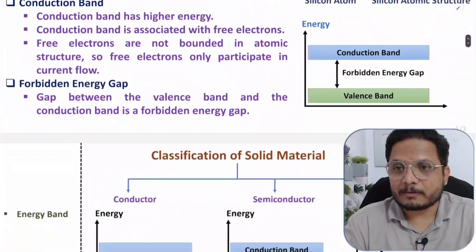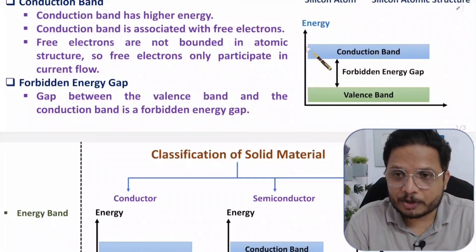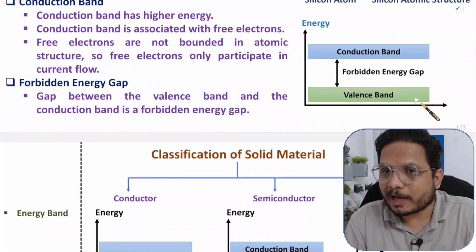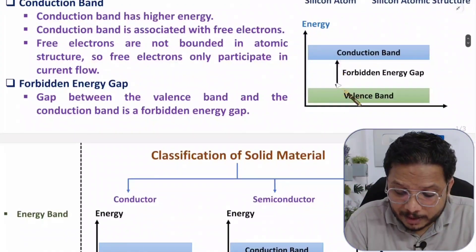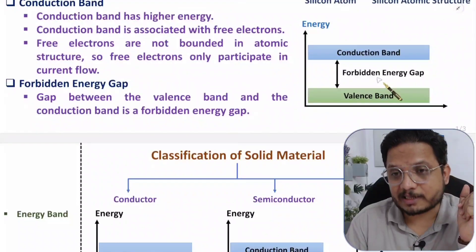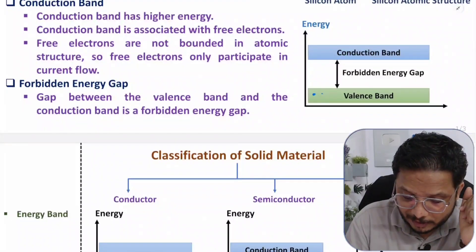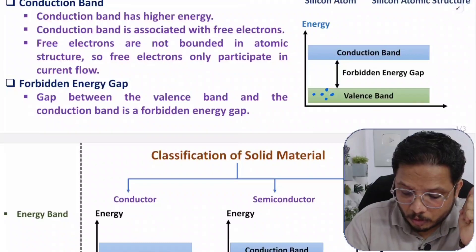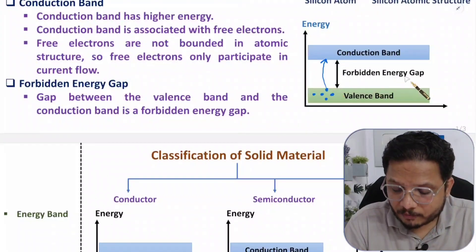In the energy band diagram, conduction band energy is high because it is associated with free electrons, and valence band energy is low because it is associated with electrons bounded in the structure. The gap between the conduction band and valence band is referred to as the forbidden energy gap. To move an electron from the valence band into the conduction band, you need to provide it with energy equal to the forbidden energy gap.